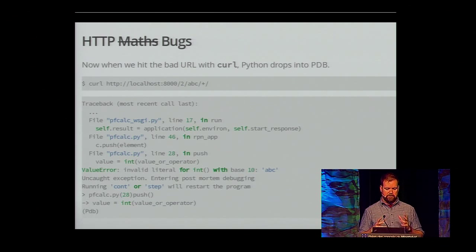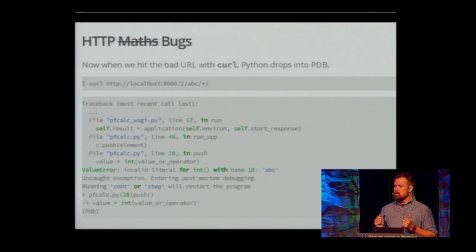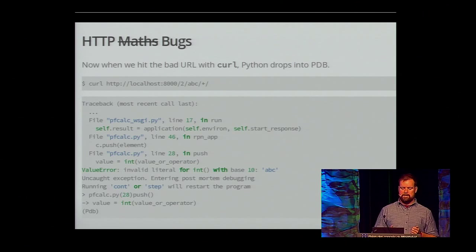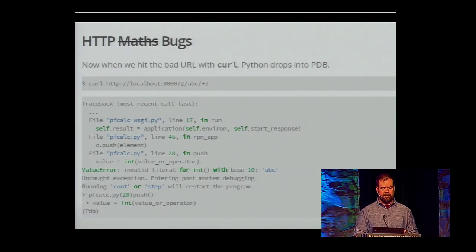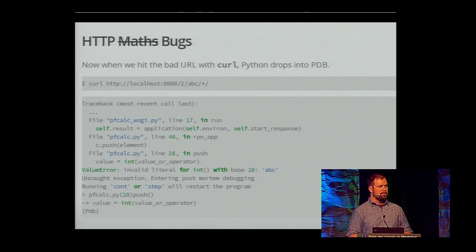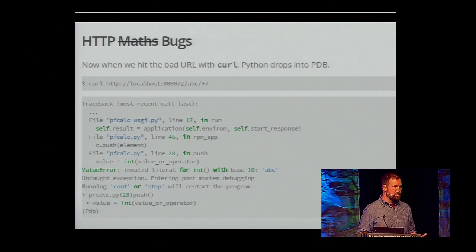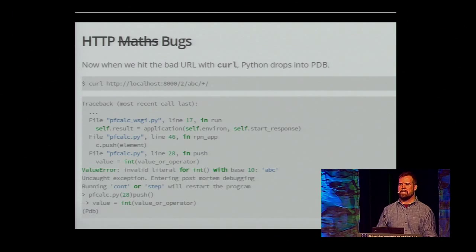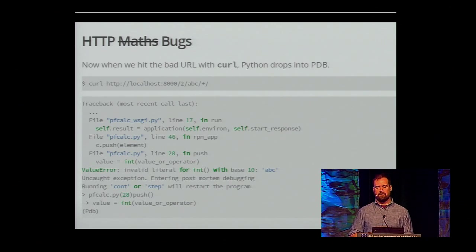You can see where the exception occurred — it's telling us it's in the push method in pfcalc.py on line 28, getting ready to call int(value_or_operator). The program has already died, but this is where it happened. This is the state I want to actually inspect to figure out what went wrong with my program.